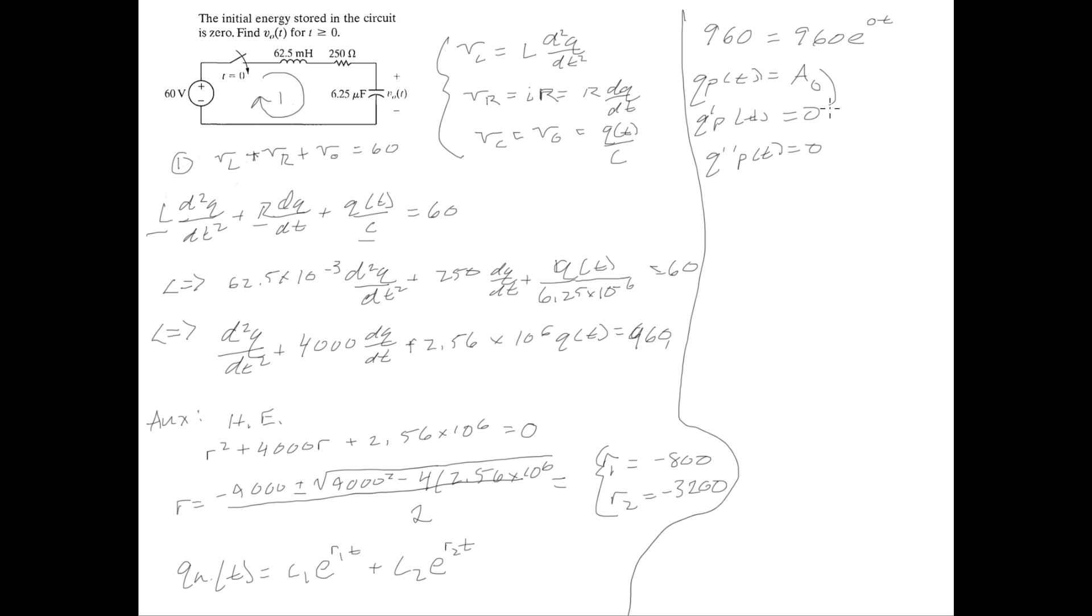Using all of these, we're just going to plug these into our equation here. So we have Q'' P of T is zero plus 4000 times Q' P of T, which is zero. So zero plus zero plus 2.56 times 10^6 Q of T, but Q of T is just A0.